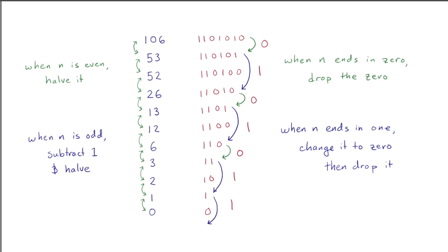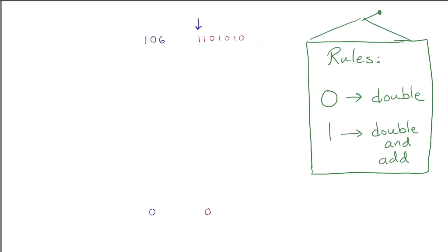So the binary expansion of a number just is the unraveling instructions. But since knitting is just unraveling backwards, we have the knitting code too. To read the knitting instructions, we read the binary from left to right.